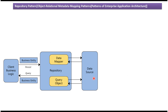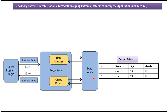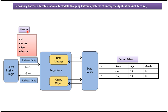Here we will see one example of the Repository Design Pattern. In the Data Source layer, there is a database with a Person Table. The Person Table has ID, Name, Age, and Gender. Corresponding to this Person Table, I have defined one Business Entity called Person, and it also has ID, Name, Age, and Gender.